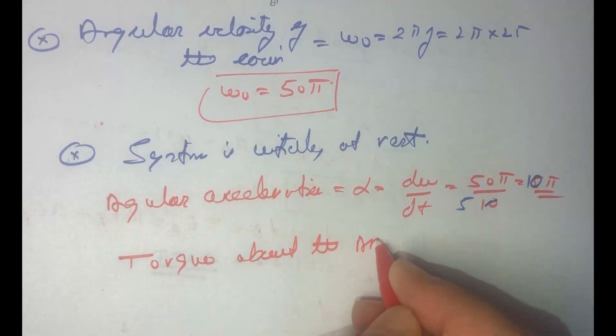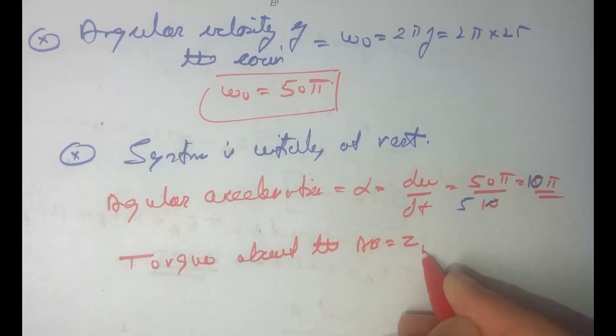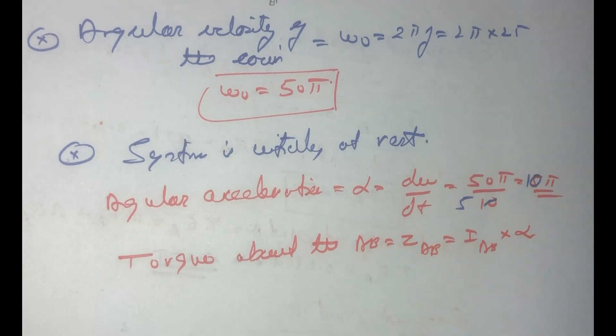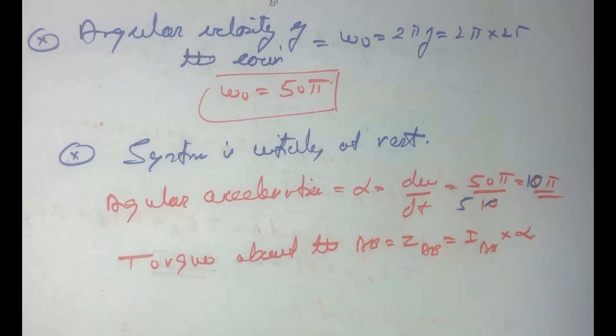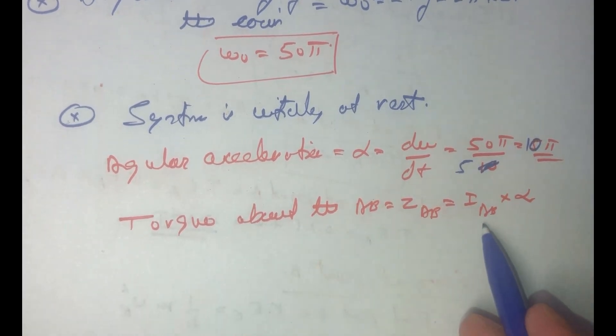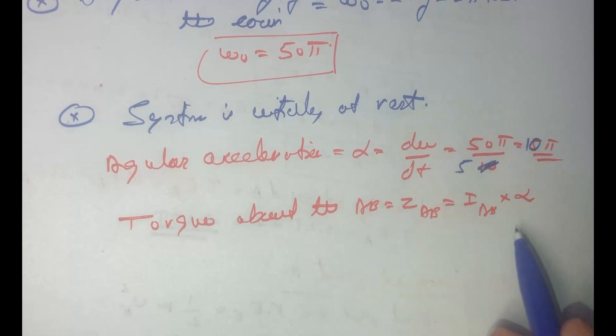So we got the angular acceleration and torque about AB, let us suppose given as tau AB which will be equal to moment of inertia about AB multiplied by angular acceleration. Angular acceleration we calculated is 10 pi, so therefore we need to find out what will the moment of inertia of this coin about AB.